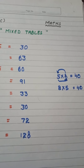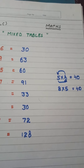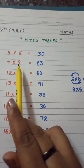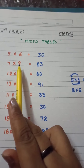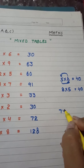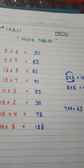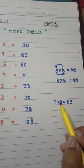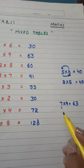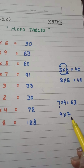Always remember: if you are getting confused in any table, you can read the opposite number's table. For example, seven nines are 63, but if you cannot recall the table of seven, read the table of nine — nine sevens are also 63.